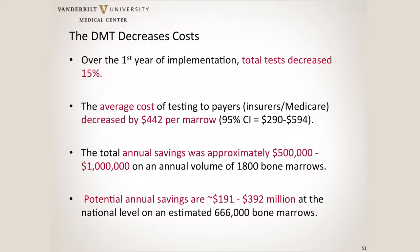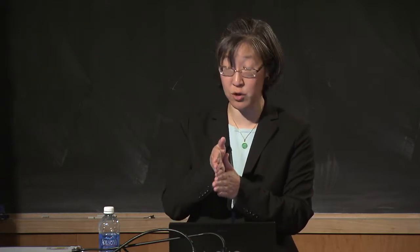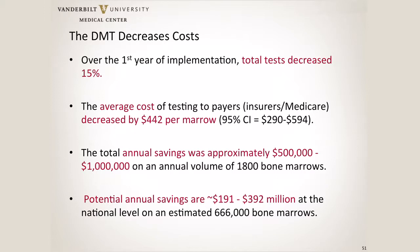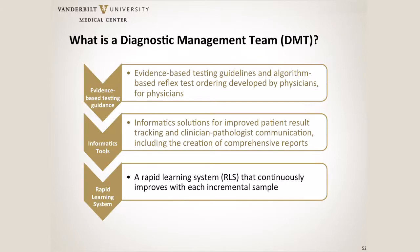Most importantly, the DMT actually decreased cost. We decreased total testing by 15% in that first iteration — not the target 26% because we left in a lot of extra testing and weren't all interpreting the SOPs the same way. By the next iteration we'd decreased to 21%. The average cost savings to payers was over $400 per marrow, which annualized to the Vanderbilt marrow load was anywhere from half a million to a million dollars. When you extrapolate to all bone marrows done in the United States, we're talking about hundreds of millions of dollars that could be saved in unnecessary ancillary testing.